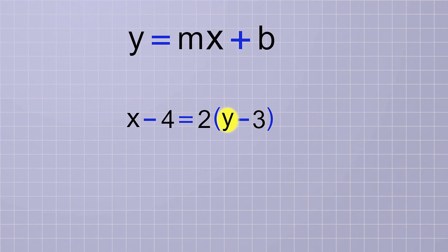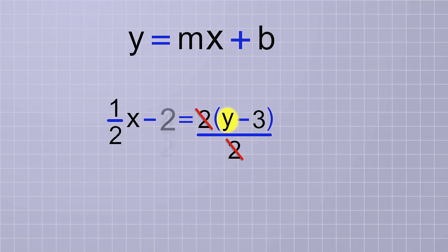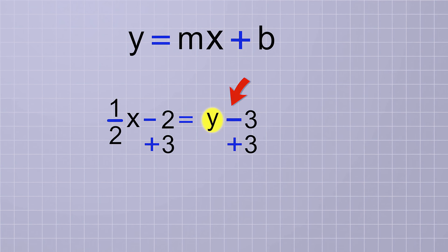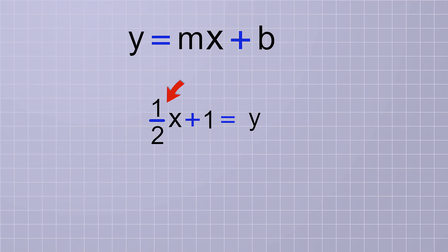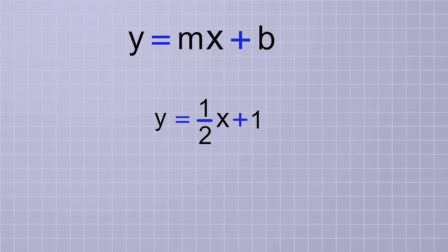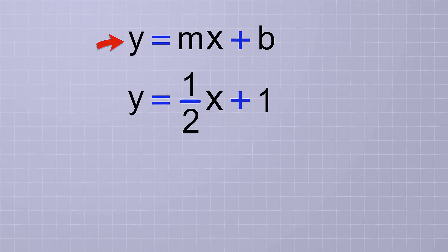We want to get y by itself, so first we divide both sides by 2. On the right, the 2's cancel, and on the left we distribute the division to get x over 2 minus 4 over 2, which is one-half x minus 2. Next, we add 3 to both sides. On the right the minus 3 and plus 3 cancel, and on the left we have minus 2 plus 3, which is positive 1. So the equation becomes y equals one-half x plus 1. Now it's in slope-intercept form — the slope is one-half and the y-intercept is positive 1.